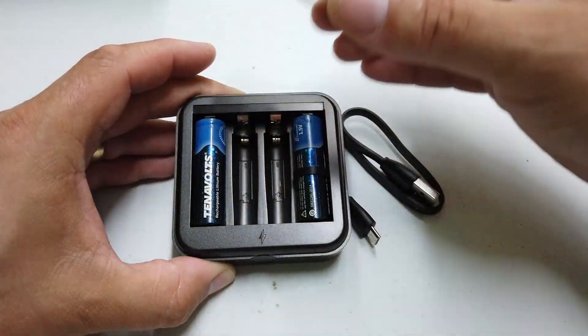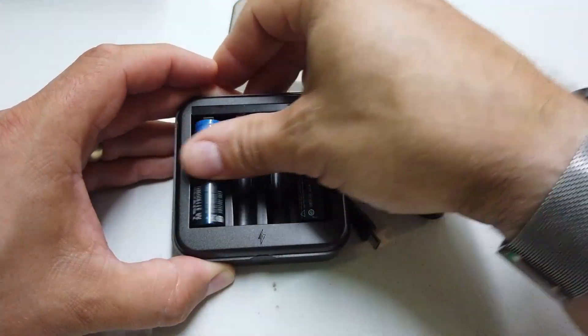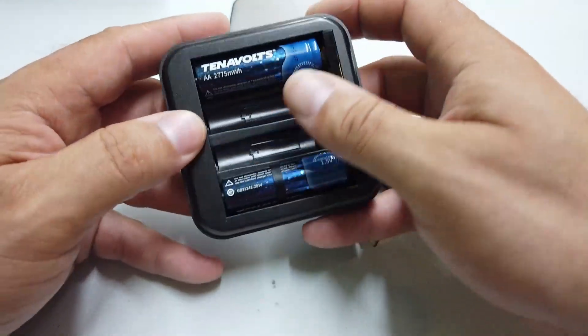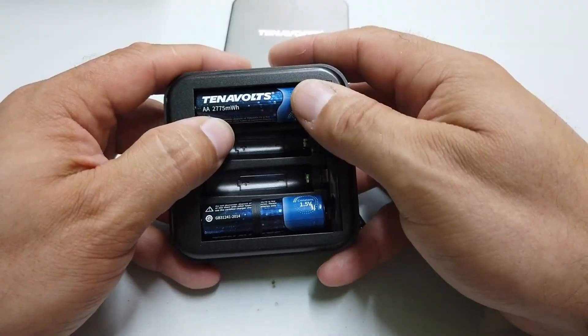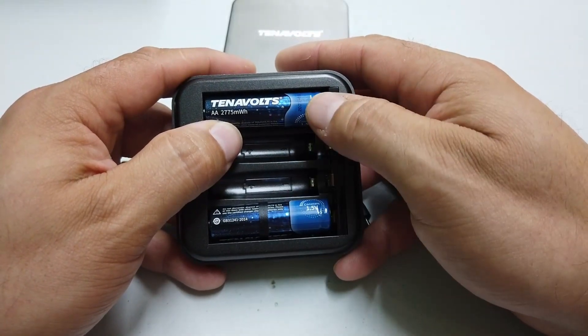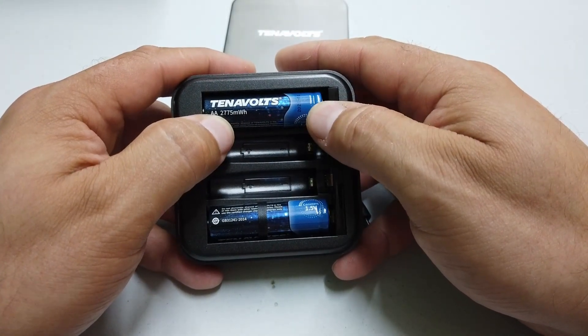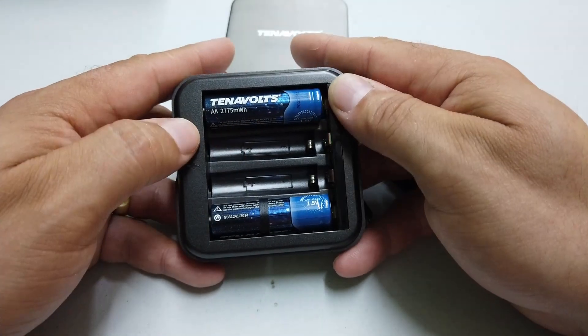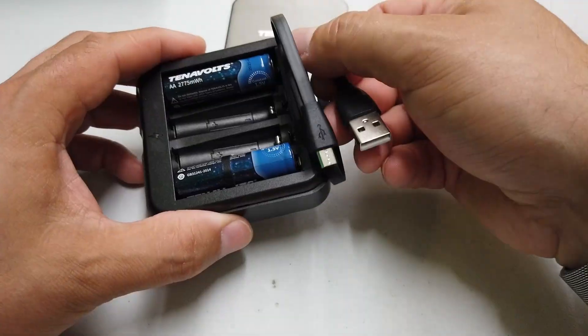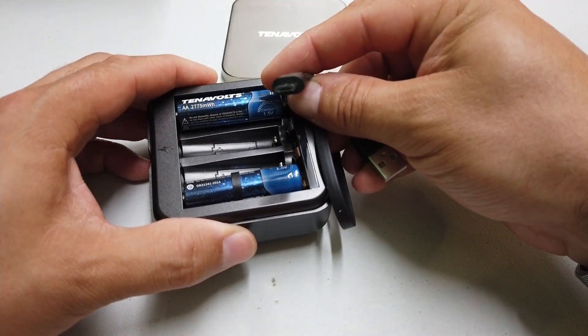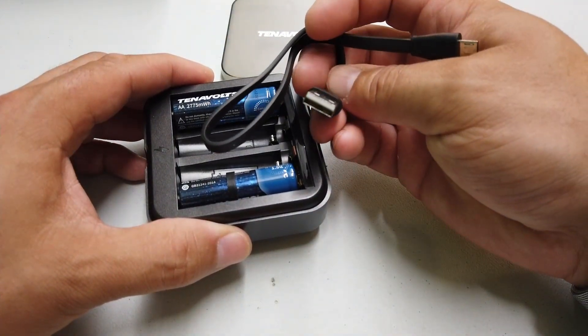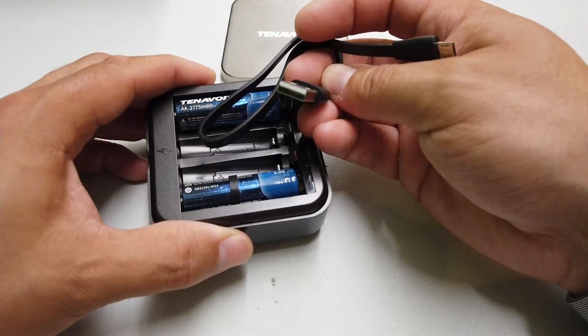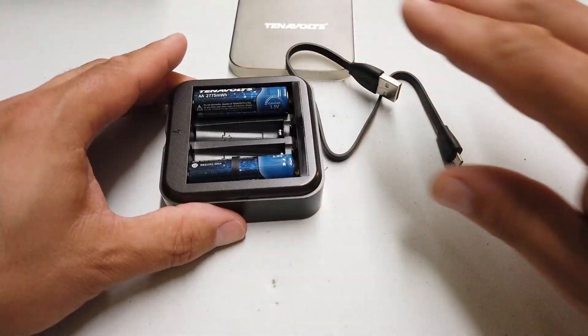Finally, Tenovolts. Tenovolts come with a covered USB charger. In here we have four Tenovolts with 2775 milliwatt hours of power in them. Again, a micro USB style cable that plugs into a standard 5 volt USB port. We'll get these all on charge and see how they perform.